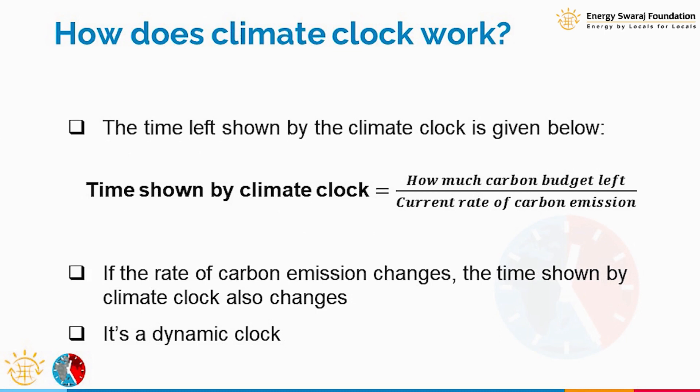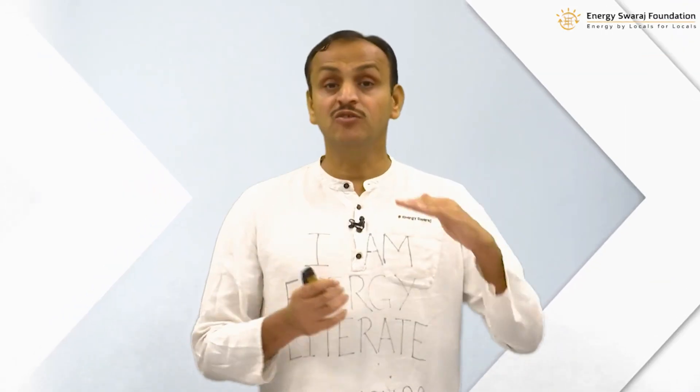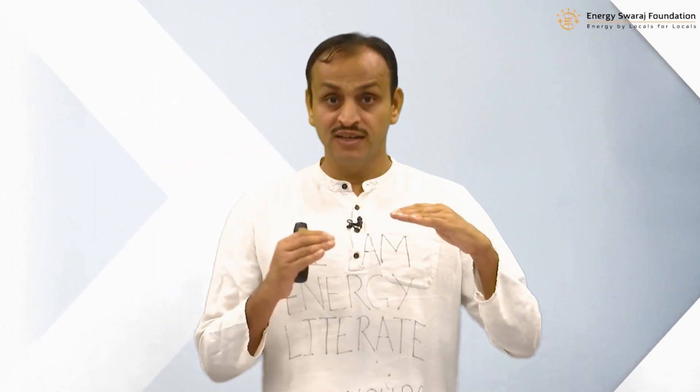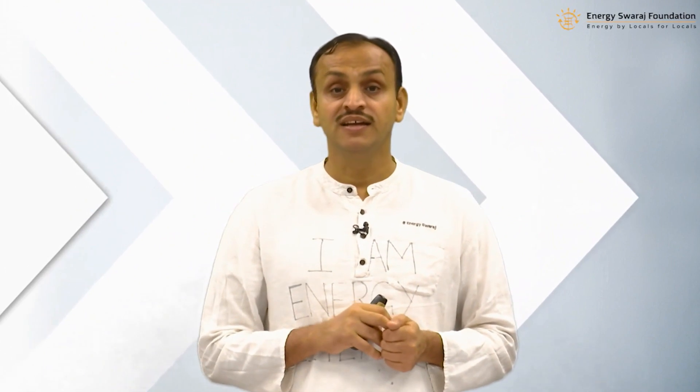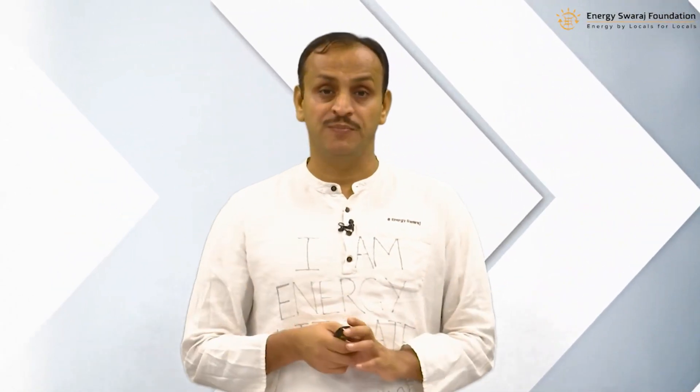There are two parameters. The first parameter is what is the carbon budget. The more carbon dioxide in the atmosphere means more global warming, because carbon dioxide is a greenhouse gas. Right now there is a certain level of carbon dioxide and we are emitting it continuously, so the carbon dioxide level in the atmosphere is increasing.